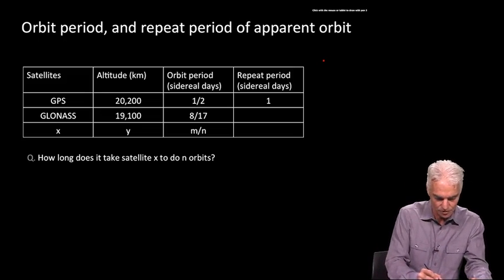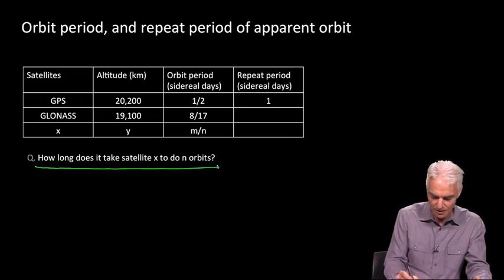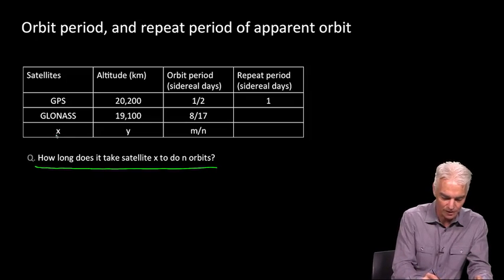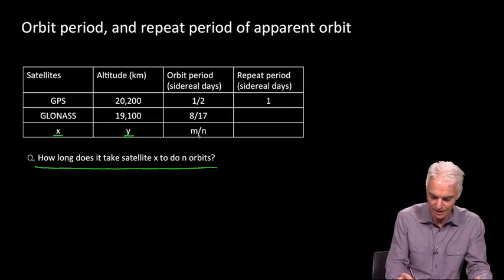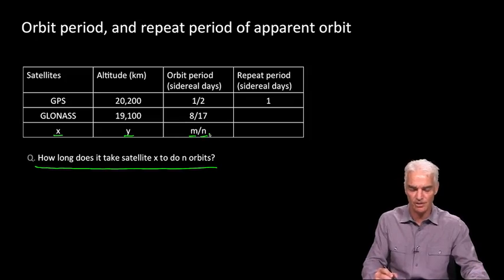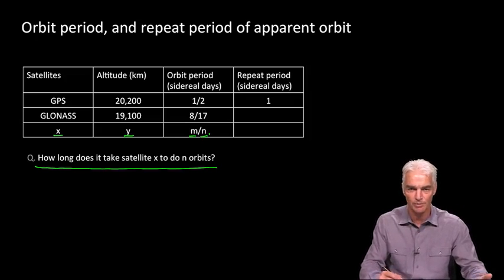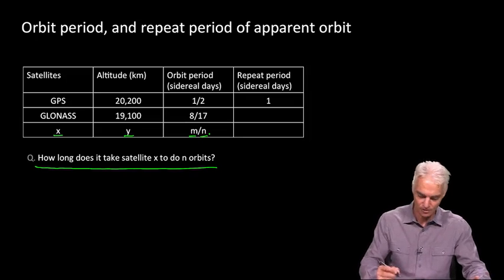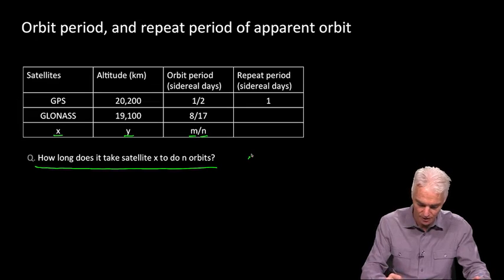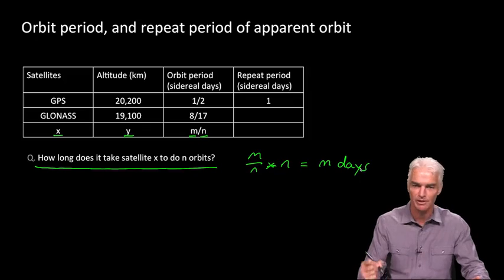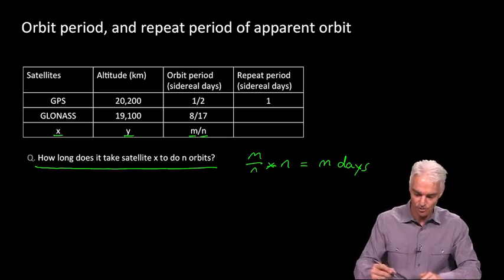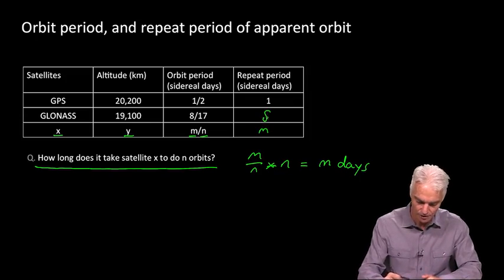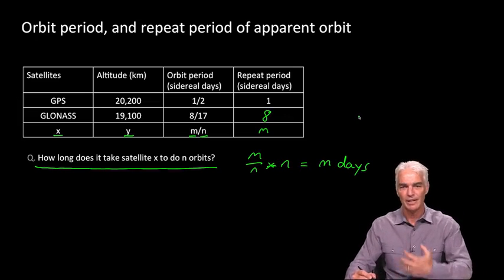The right question is this: suppose there's some general satellite X with some altitude Y and some integer orbit period M over N sidereal days. For any such satellite, how long does it take that satellite X to do N orbits? That's now quite a simple question. Each orbit takes M over N day multiplied by N equals M days—by days I mean sidereal days. That was an easy answer because I asked the right question. So in 8 days, a GLONASS satellite completes 17 orbits exactly, and the Earth spins on its axis 8 times exactly, and everything is back where it started.